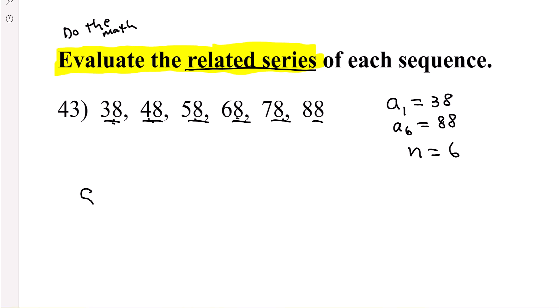And then the formula, it's uppercase S sub n, is equal to the number of terms divided by 2. You're going to multiply that result by the first term adding to the last term.